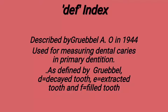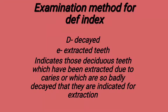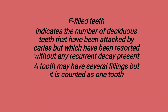DEF index was given by Gruebbel A.O. in the year 1944. It is used for measuring dental caries in primary dentition. DMFT and DMFS are used for permanent dentition; DEF is for primary dentition. As defined by Gruebbel: D for decayed tooth, E for extracted tooth, and F for filled tooth. In the examination: E indicates deciduous teeth extracted due to caries or so badly decayed they are indicated for extraction. F indicates deciduous teeth previously attacked by caries but restored without recurrent decay. A tooth may have several fillings but is counted as one tooth.